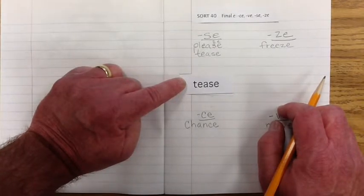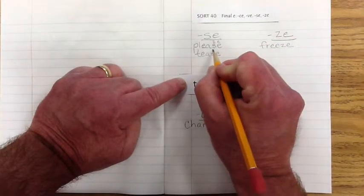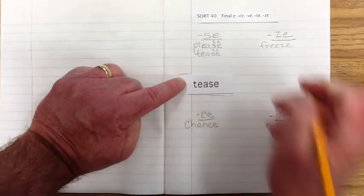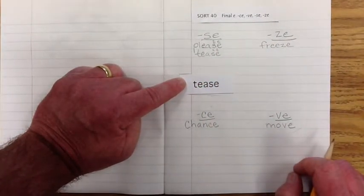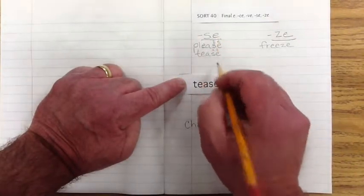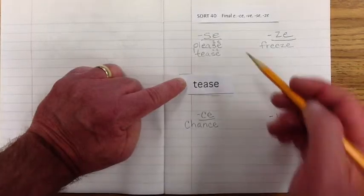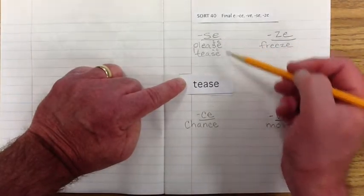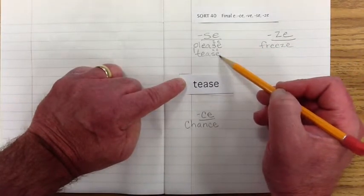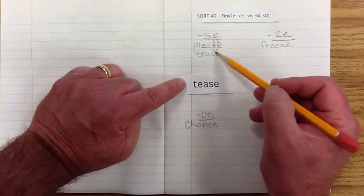Please. Tease. This one also has that Z sound, doesn't it? Interesting. I wonder if the rest of them have that. So, as you're going through and finishing the sort, make sure you pay attention to that. See if that pattern holds true, where we have the S-E at the end. See if it makes that Z sound.